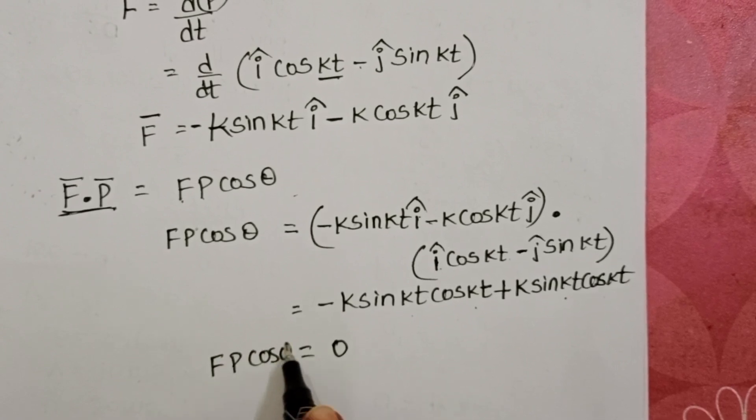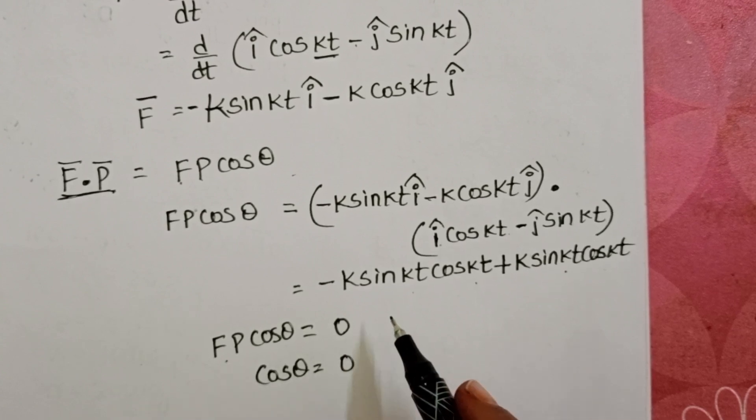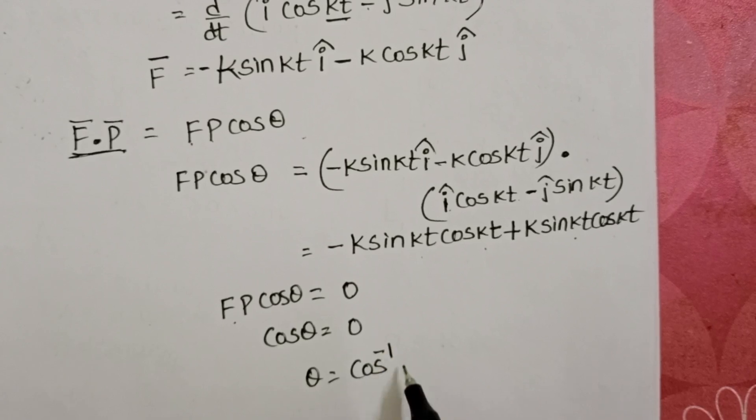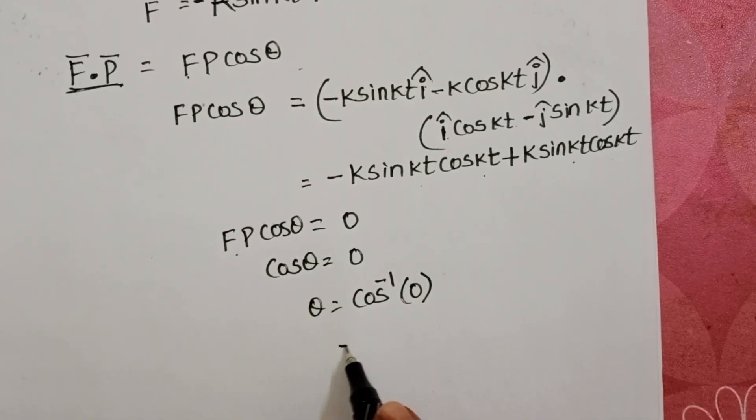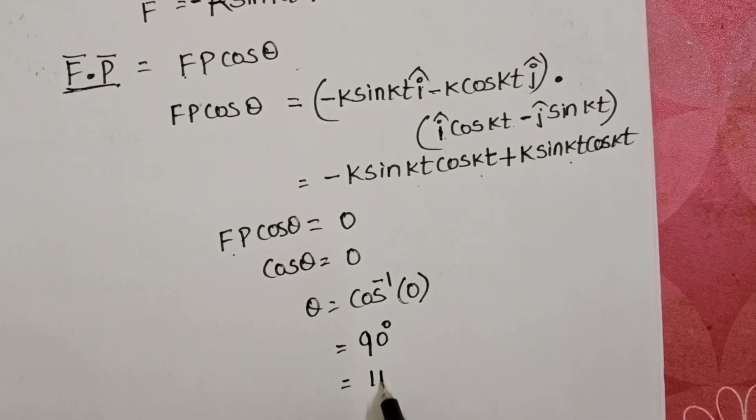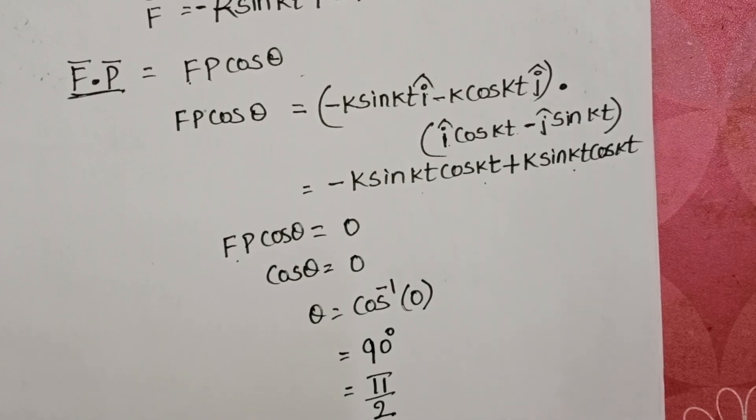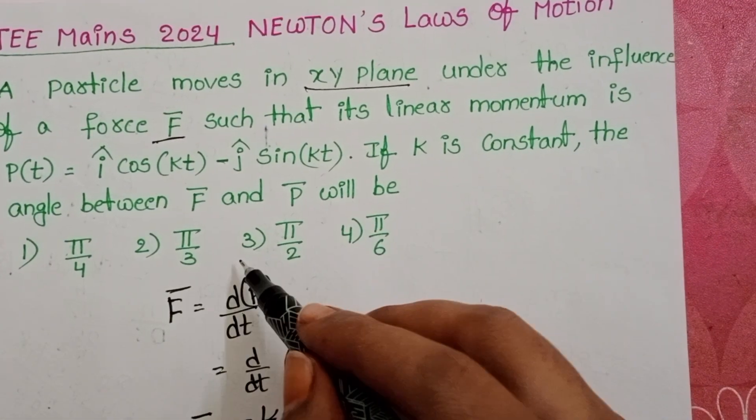Then, what about the cos theta? Cos theta equals 0. 0 by anything equals 0. Then, theta equals cos inverse 0. We know cos 90 degrees equals 0. So, angle is 90 degrees in radian pi by 2 radians. The angle between force and momentum is pi by 2 radians. Third option is correct.